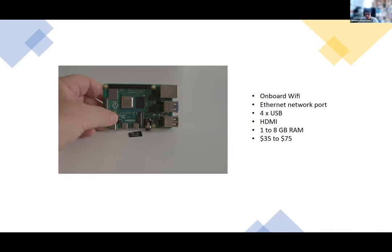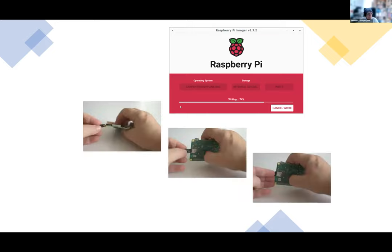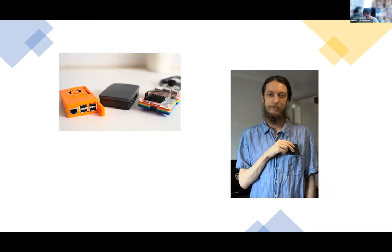You don't have to use a Raspberry Pi — you could use any available computer. But we are focusing on the Pi because they allow us to package everything you need to run a workshop onto less than a 16-gigabyte micro SD card. As an instructor, you download a file of about 5 gigabytes, write it onto the SD card, put the SD card into the Pi, stick it in your pocket, and you are ready to run your workshop.